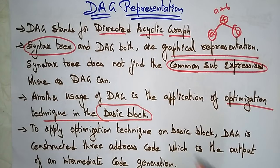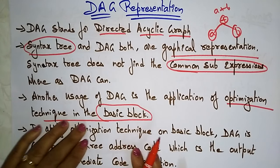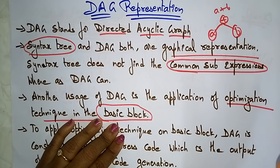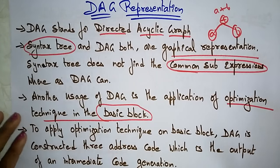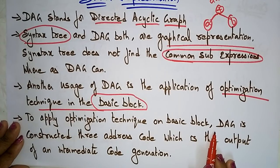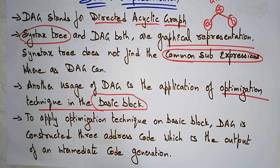Finding common sub-expressions is one function, and the DAG also has an optimization technique for the basic block. So in a basic block, if there are common sub-expressions, the DAG finds them and applies optimization. The DAG is constructed from three-address code, which is the output of the intermediate code generation stage.